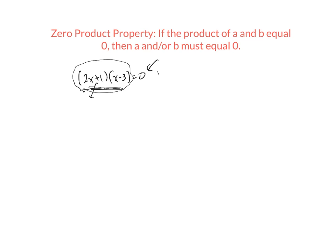That would mean that either 2x plus 1 would equal zero and/or x minus 3 equals zero. Now we have two simple linear equations to solve that we can solve by normal reverse PEMDAS method.